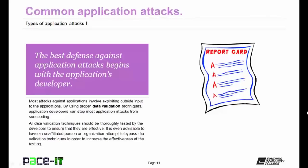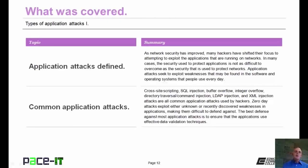The best defense against application attacks begins with the application's developer. Most attacks against applications involve exploiting outside input to the application. By using proper data validation techniques, application developers can stop most application attacks from succeeding. All data validation techniques should be thoroughly tested by the developer to ensure that they are effective. It is even advisable to have an unaffiliated person or organization attempt to bypass the validation techniques in order to increase the effectiveness of the testing. That concludes this session on types of application attacks, part one.